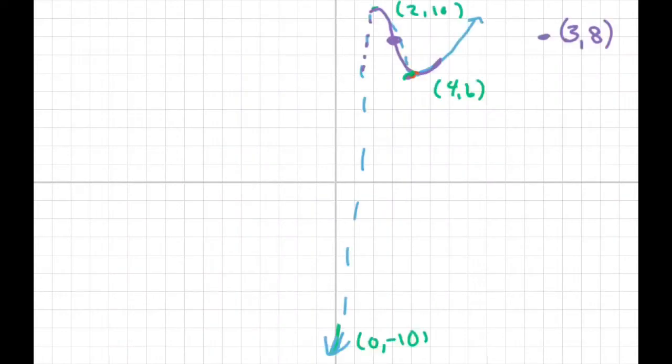So here we have the graph. I did the graph here. We have an inflection point at (3, 8) right in here. So it's concave down, then it starts concaving upward here at this inflection point.